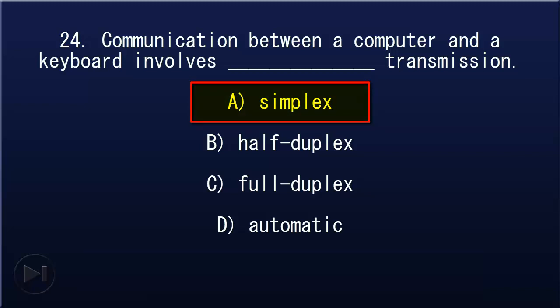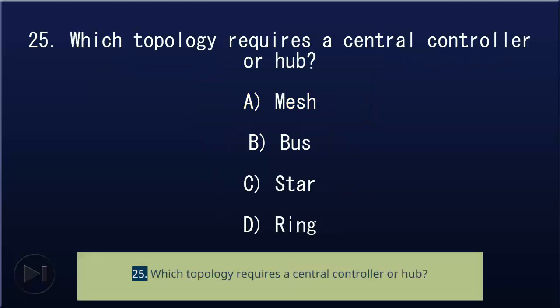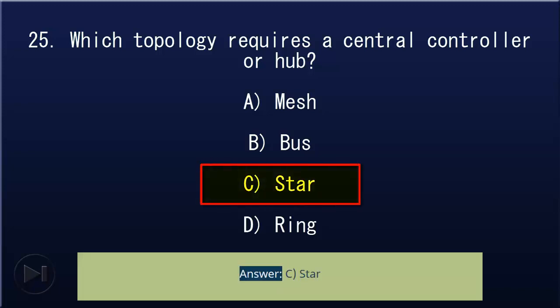25. Which topology requires a central controller or hub: A) mesh, B) bus, C) star, D) ring. Answer: C, star.